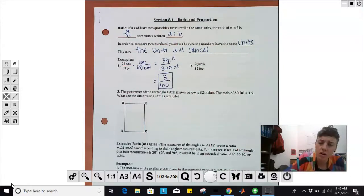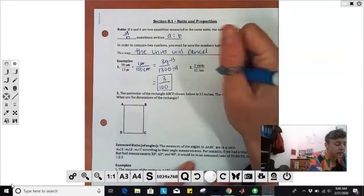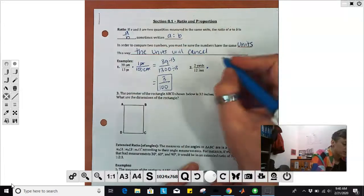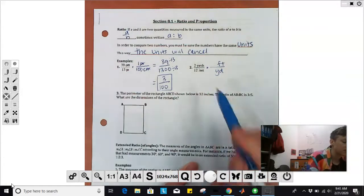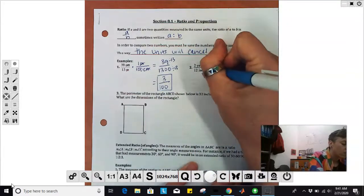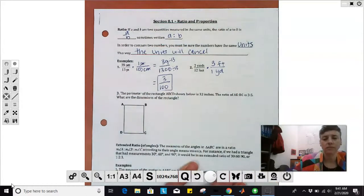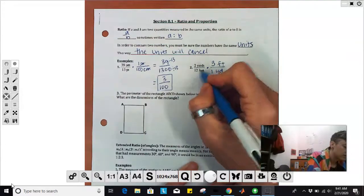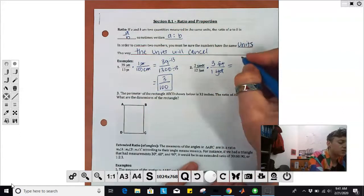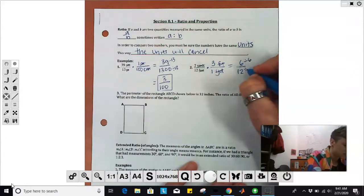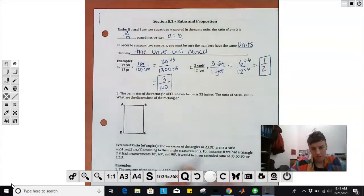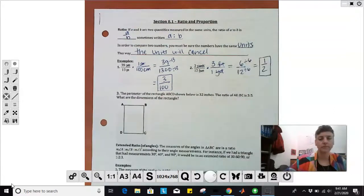Number two: the ratio of two yards to 12 feet. We're going to have to do some unit conversion. We're going to multiply it by something, put the yard on the bottom and the feet on the top so that the feet and feet cancel and the yard and yard cancel. I know that one yard is three feet. Our feet cancel, our yards cancel. We multiply straight across: three times two is six, 12 times one is 12. We can definitely reduce by dividing both by six, so we get one half, again with no units. The ratio doesn't have units because the units cancel.